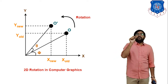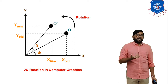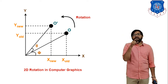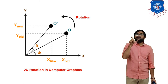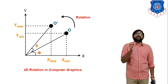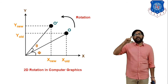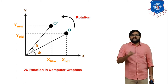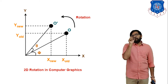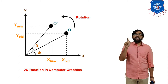Suppose the radius of point O is capital R. Based on the triangle formed by the origin, point O, and x_old, where O makes angle phi with the x-axis, we can write: x_old = R cos φ and y_old = R sin φ. This uses the standard definitions — cos φ is adjacent over hypotenuse, and sin φ is opposite over hypotenuse.